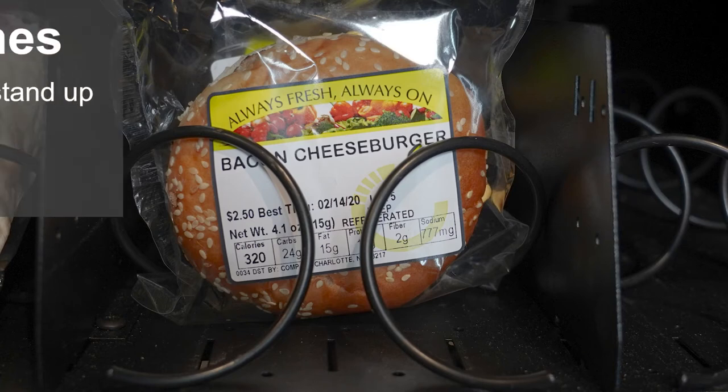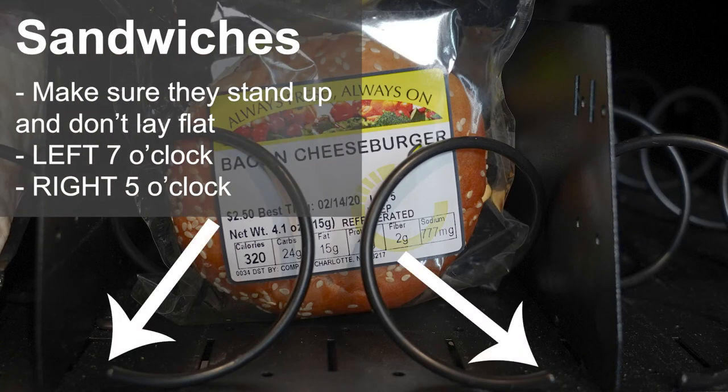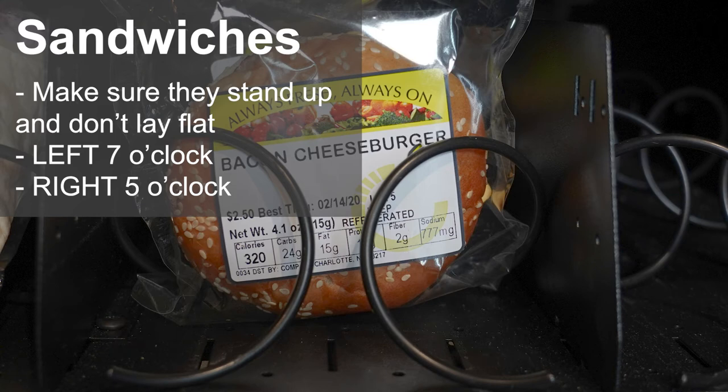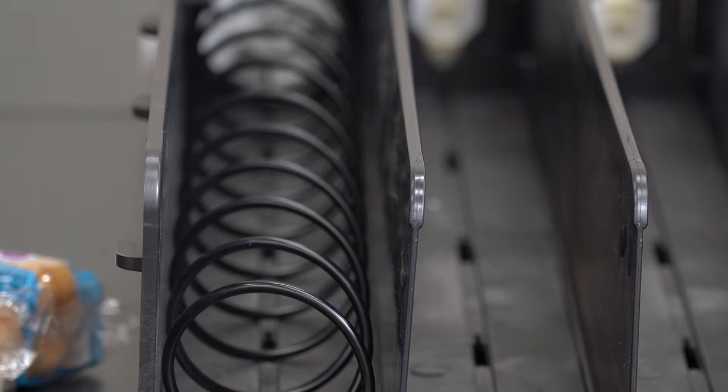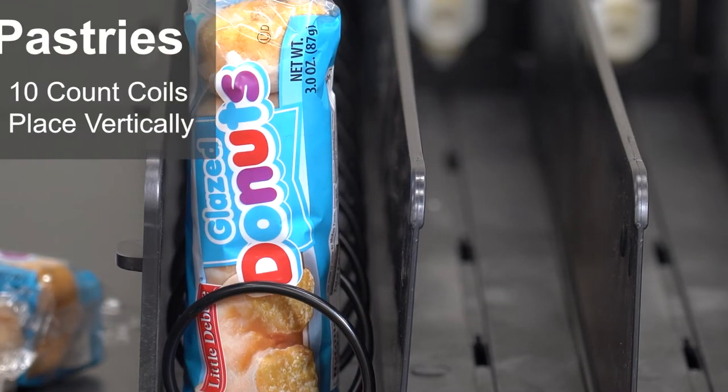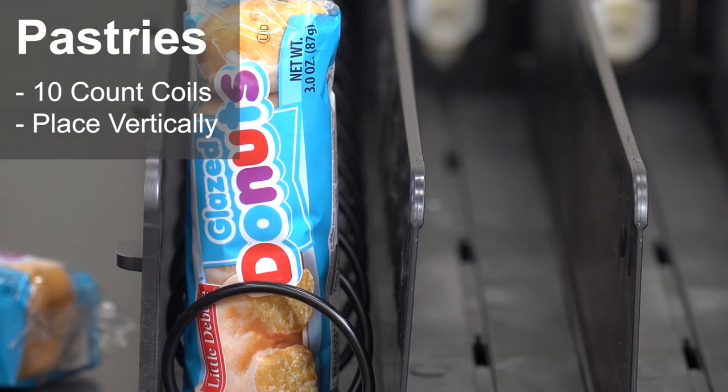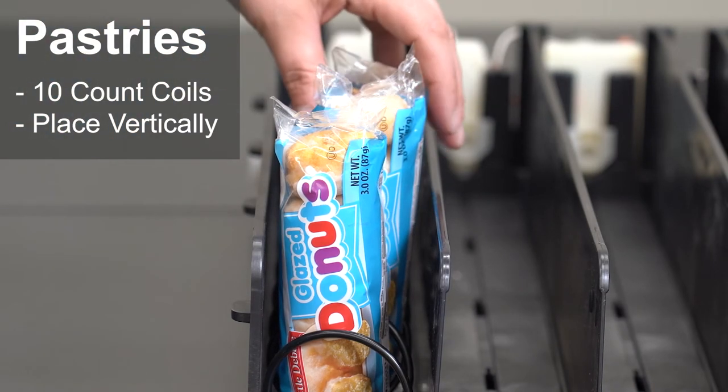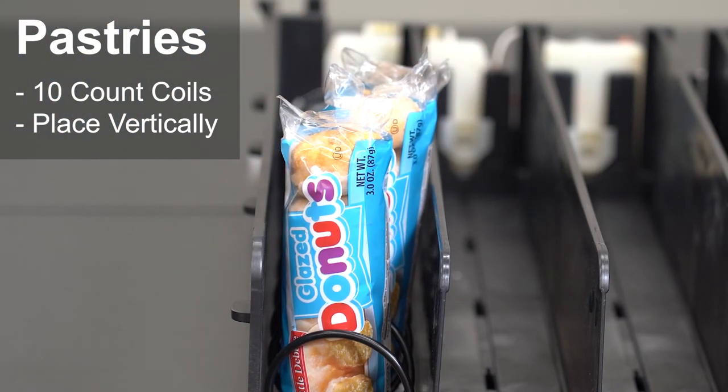Load sandwiches standing up. Make sure coils are at seven o'clock on the left and five o'clock on the right. This also works for wedge sandwiches. Using ten count coils for mini donuts can help you fit seventy to eighty packages in one tray. Place the donuts in the coils vertically.